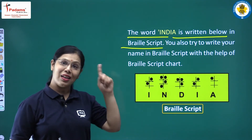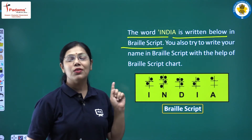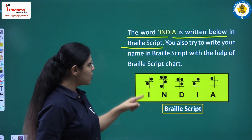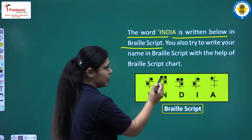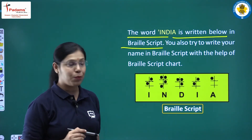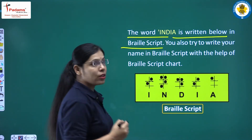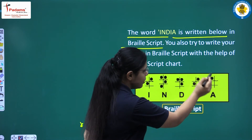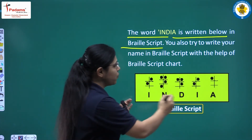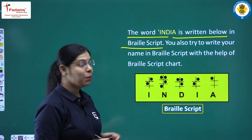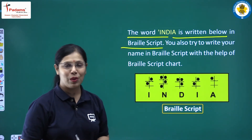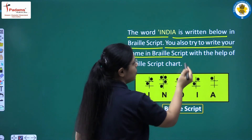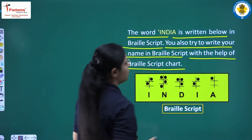We have seen the Braille script calendar and its notations in the previous part. In the word 'India': the letter I has a single dot embossed, N has four different dots embossed, D has three different dots embossed, I again has two different dots embossed, and A has a single dot embossed. So this is the manner in which 'India' is written in Braille script. Similarly, you also try to write your name in Braille script with the help of the Braille script chart.